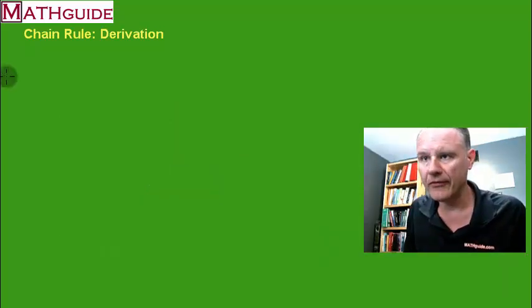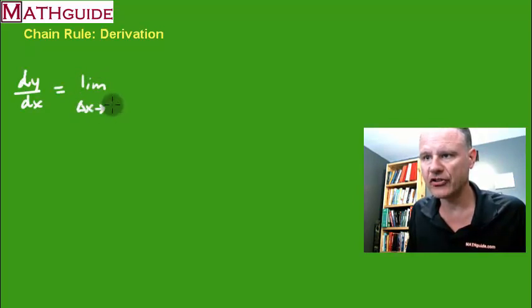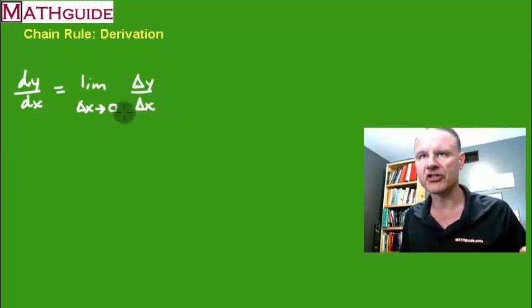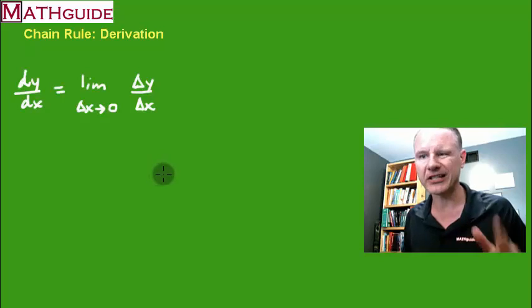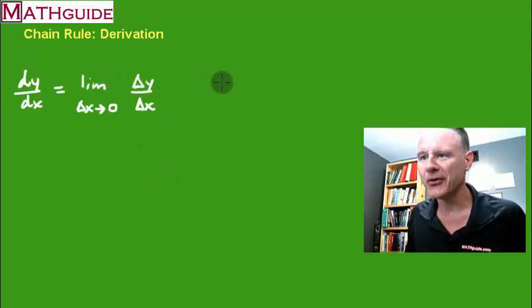Let's talk about the derivative of a function with respect to x. Really, this just means we're taking the limit as delta x approaches 0 of delta y over delta x. Remember, this is the definition of what slope means, right? Isn't slope just the change in y over the change in x? And we're throwing in the concept of a limit because we're specifically talking about the slope of a tangent line.